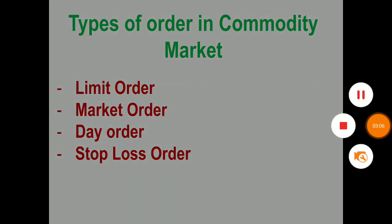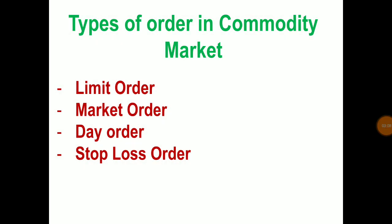The last order is the stop loss order. When this order is placed, it remains in the system but in a suspended mode. It becomes visible and activates when the market price reaches a specific point called the trigger price, which is defined by the trader. It is used as a tool to limit losses.